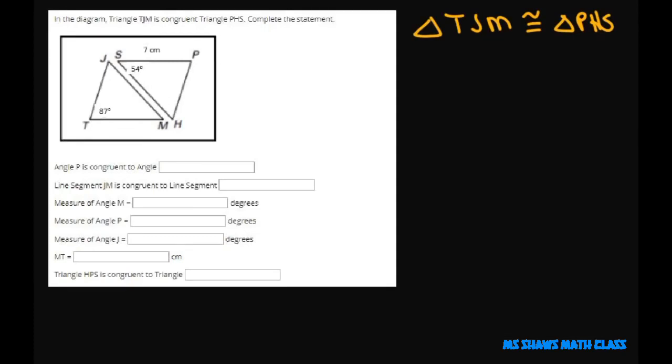So angle P is congruent to angle T. The reason you know that is you go in order. This has to go in order. So P is congruent to angle T, so this would also be 87 degrees.